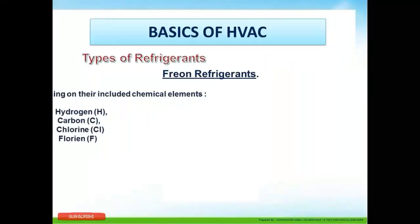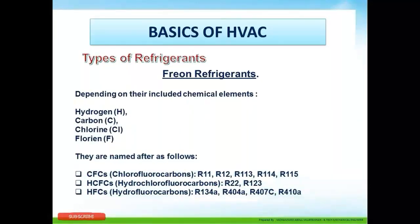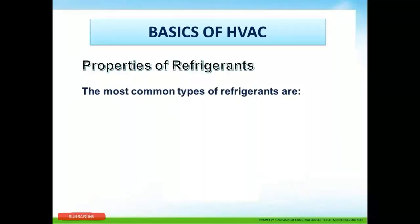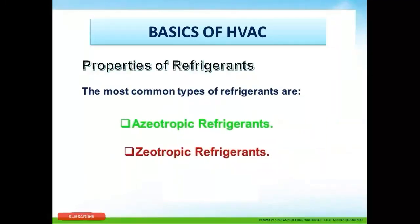A refrigerant's chemical composition includes hydrogen, carbon, chlorine, and fluorine. Refrigerants are named and classified as follows: CFCs, HCFCs, and HFCs. CFC stands for chlorofluorocarbons, HCFC for hydrochlorofluorocarbons, and HFC for hydrofluorocarbons. The most common types of refrigerants are azeotropic and zeotropic refrigerants.